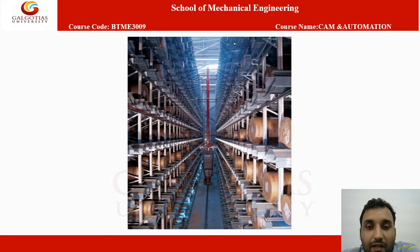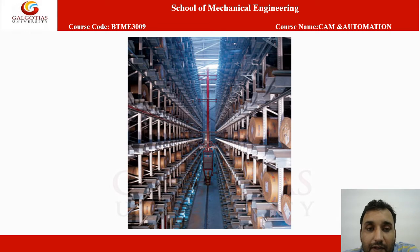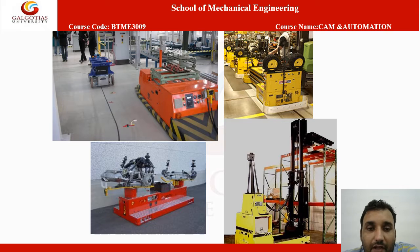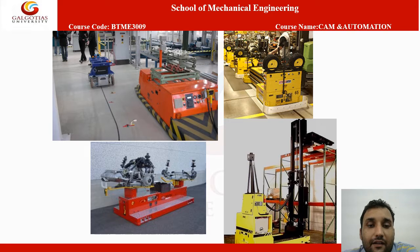This is a typical image of a material handling, storage, and retrieval system. These are the racks. As you can see, these parts have some unique codes which will be scanned by this movable robot so that it can retrieve the information about what is inside each box.